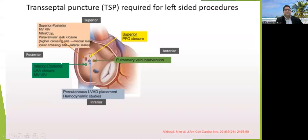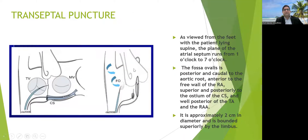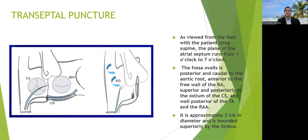There are various aspects of septal puncture site selection depending on the procedure. An inferior-posterior puncture is needed for left atrial appendage closure. A superior-posterior puncture is required for MitraClip placement, mitral valve-in-valve, TMVR, and sometimes for BMV. A superior approach is used for PFO closure, and an anterior approach for pulmonary interventions. The fossa ovalis is approximately two centimeters in diameter, located posterior and caudal to the aortic root, anterior to the free wall of the RA, and superior and posterior to the coronary sinus os.